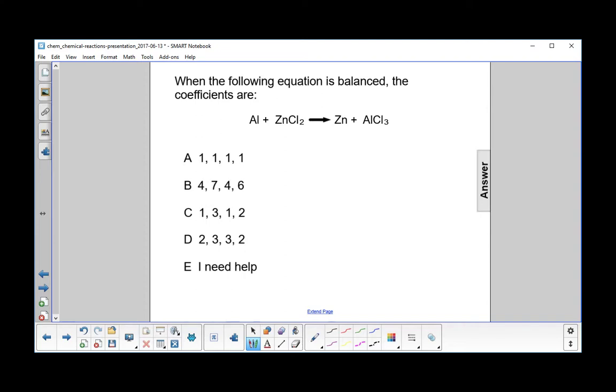When the following equation is balanced, the coefficients are. So let's write down: here's aluminum, zinc, and chlorine.